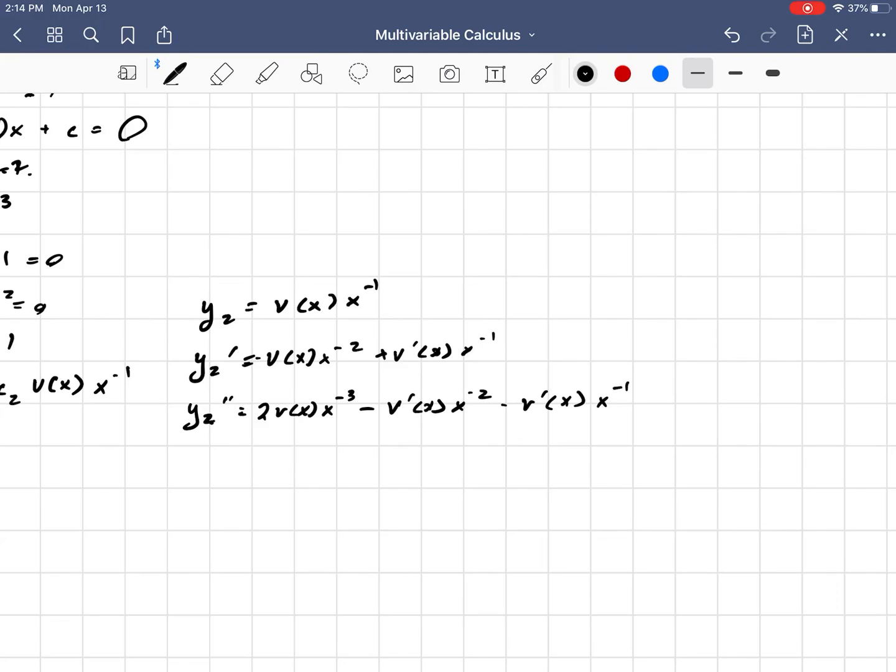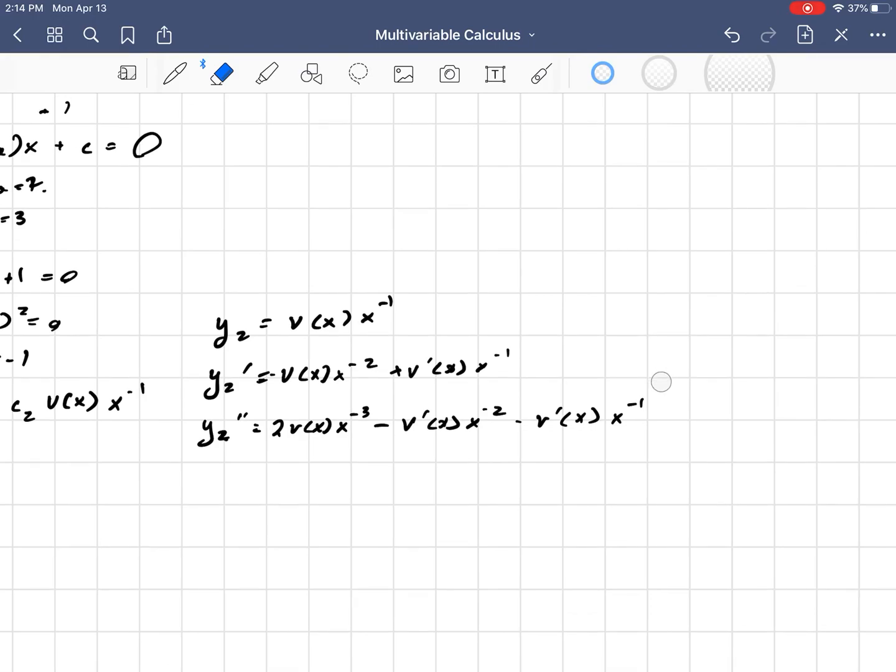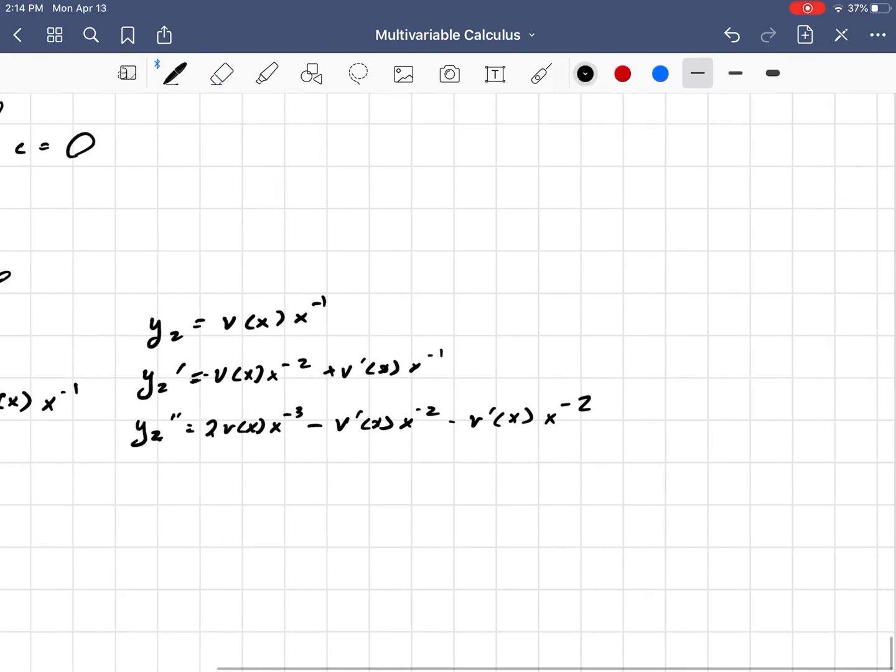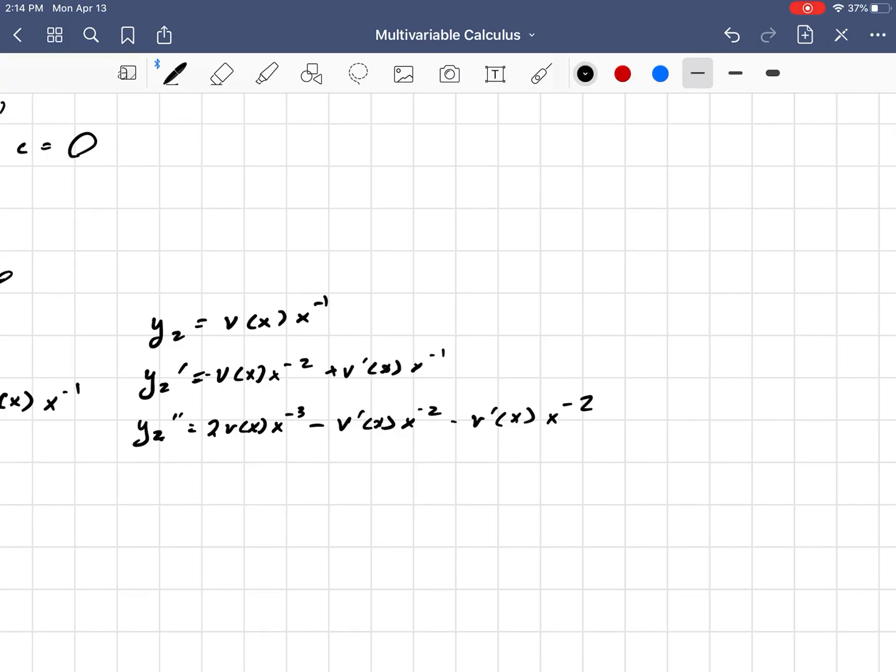Now the second part is -v'(x)x⁻², because I differentiated x⁻¹. Plus v''(x) times x⁻¹. I hope I didn't mess up on the differentiation anywhere.